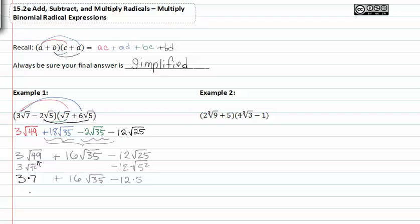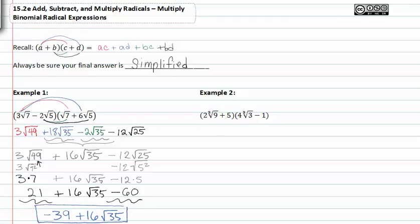When we're done with all our simplification we get twenty-one plus sixteen root thirty-five minus sixty. We can simplify further because this right here and this right here are like terms because they're both just plain old numbers. When we do this we get negative thirty-nine plus sixteen root thirty-five and that's my final simplification of that expression.